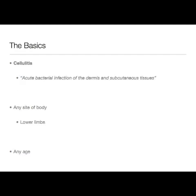Let's start with the basics. Cellulitis is an acute bacterial infection of the dermis and subcutaneous tissues. It can affect any site of the body, but particularly it affects the lower limbs. It can occur at any age — in children, middle-aged people, and most commonly perhaps in the elderly, who often have many of the risk factors for the development of cellulitis.